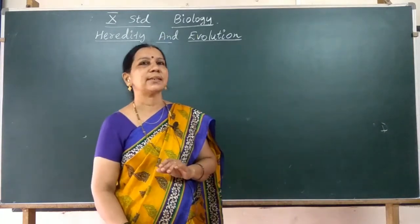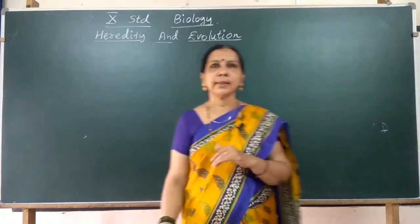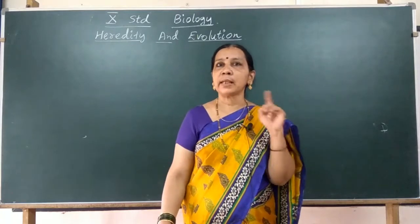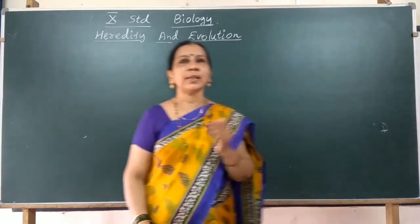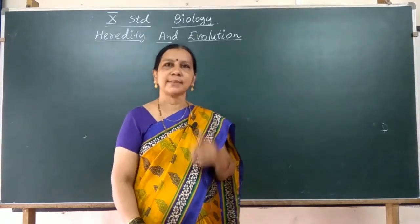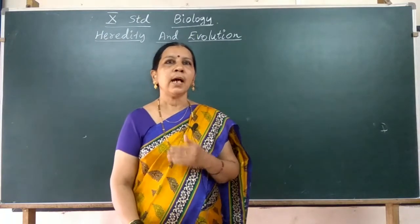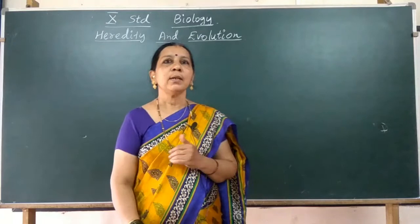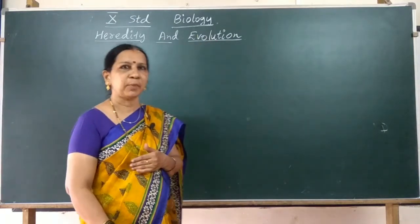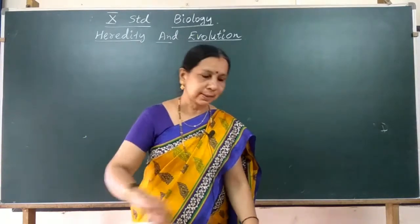In the last class we discussed that each trait is influenced by both maternal DNA and paternal DNA, meaning each trait has two factors. These factors may be of the same type or of different type. Now let us try to understand how traits are inherited through Mendel's experiments. By understanding the results of Mendel's experiments, we can know the rules of inheritance of traits.